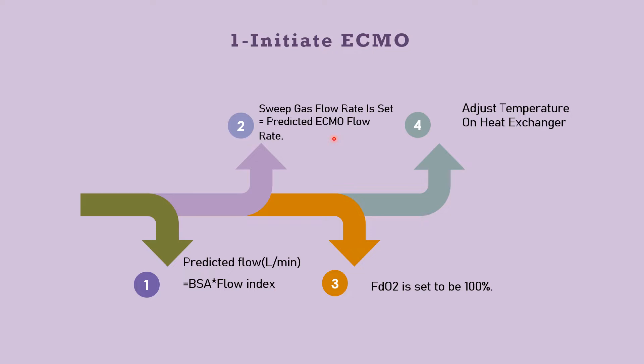We should note that sweep gas is set at a lower rate to avoid post-hypercapnic metabolic alkalosis or avoid sudden decrease in PCO2. Then start FiO2 from the ECMO side at 100%. Adjust the temperature on the heat exchanger to keep the patient normothermic.